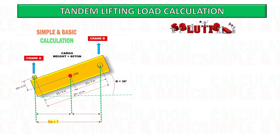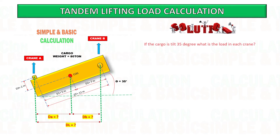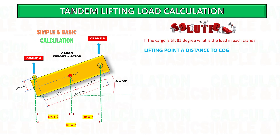Based on the formula given, find the distance of lifting point A and B to the center of gravity at 35 degrees tilt. See the calculation below — you can pause the video and follow along.